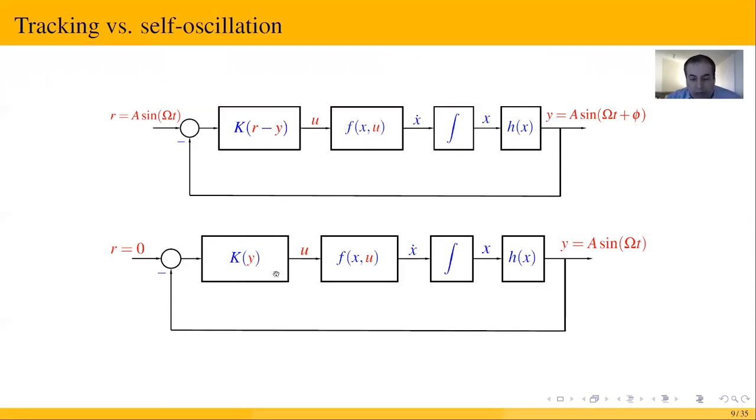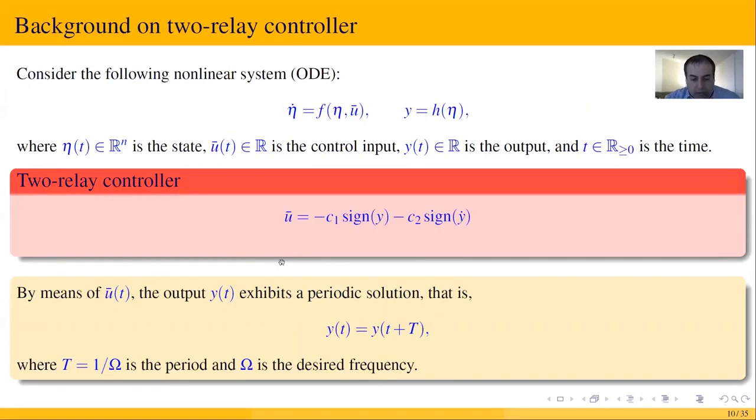Here K_y is the two-relay controller. The two-relay controller consists of two discontinuous functions in terms of the output and its time derivative with constants c1 and c2 used to tune the frequency and amplitude of the signal. Notice that the two-relay controller is similar to the twisting controller. However, c1 and c2 can be any real number.